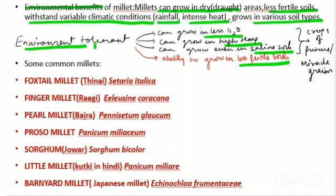Because of the environmental tolerance and nutritional level, these crop plants or cereal plants are also referred to as the crops of future or the miracle grains by scientists.